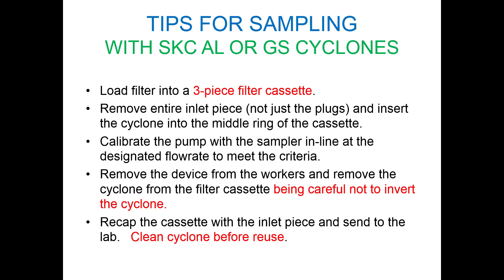This slide recaps the important tips for sampling with the SKC aluminum or GS cyclones. Make sure you load the filter into a three-piece cassette. Remove the entire inlet piece, not just the red-blue plugs, and insert the cyclone into the middle ring. Calibrate the pump at the designated flow rate. After sampling, remove the cyclone from the filter cassette, being very careful not to invert it. Recap the cassette with the inlet piece for transport to the lab, and make sure you clean the cyclone before reuse.